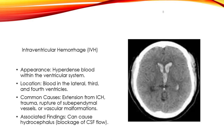Intraventricular hemorrhage, IVH, presents on CT scan as hyperdense blood in the ventricular system. IVH can develop as an extension of traumatic intracerebral hemorrhages. Hydrocephalus commonly occurs following intraventricular hemorrhages.